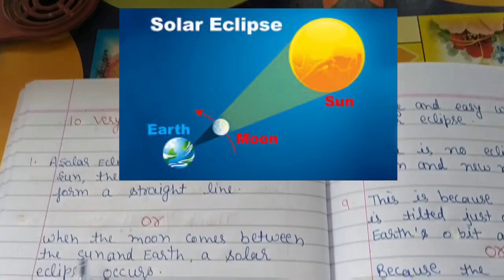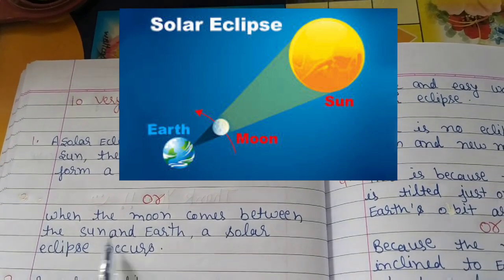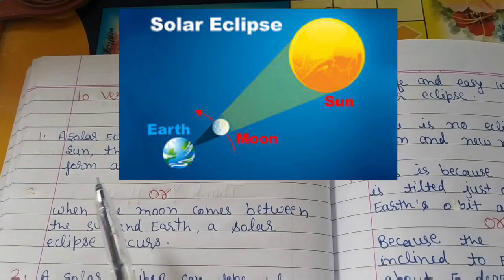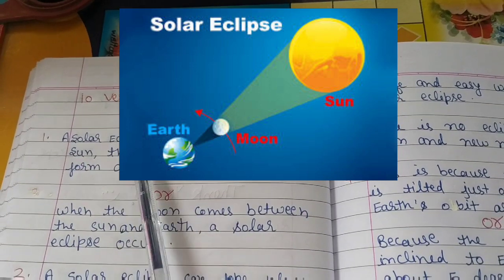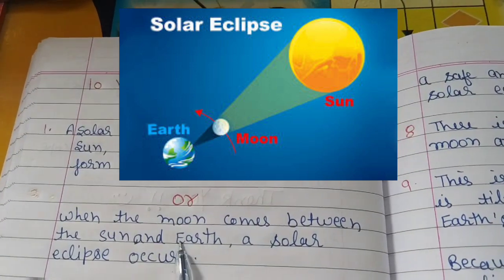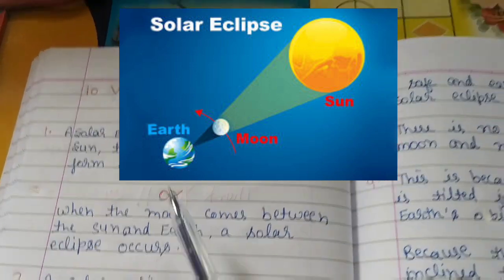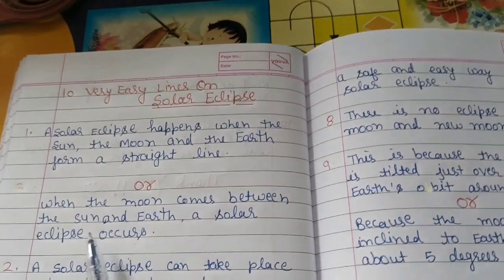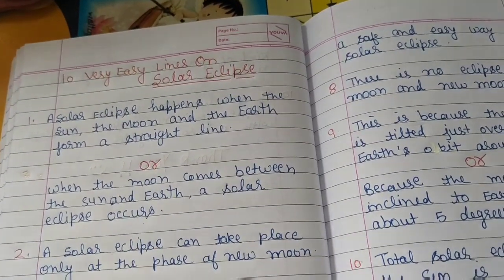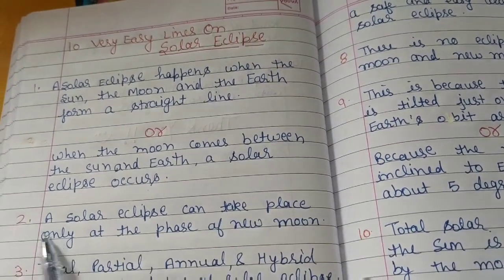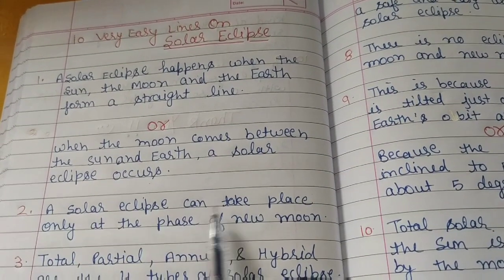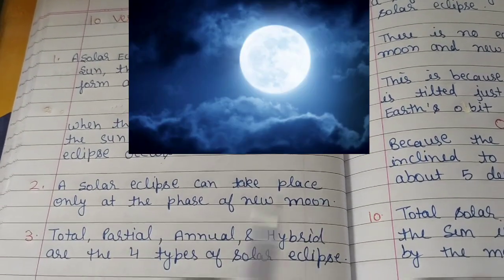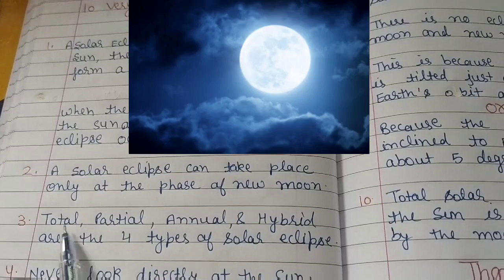When the moon comes between the sun and earth, a solar eclipse occurs. Second point: a solar eclipse can take place only at the phase of new moon.